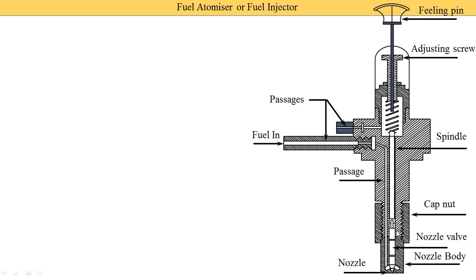So, how does this nozzle valve operate? When it moves in the upper direction, the nozzle valve is connected with this spindle, and this spindle is connected with this spring. This spring is further connected with the filling pins and the adjusting screw. The adjusting screw is provided to adjust the tension of this spring, and according to this tension, the valve motion is controlled.